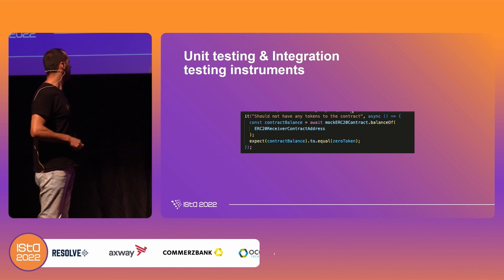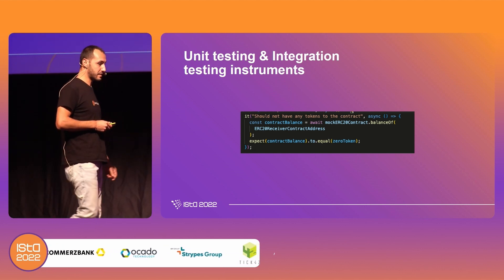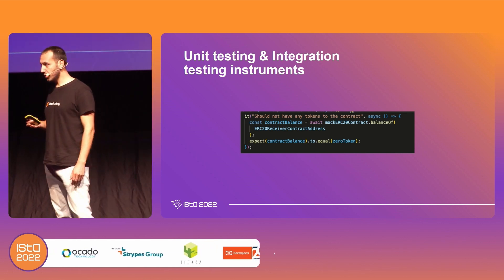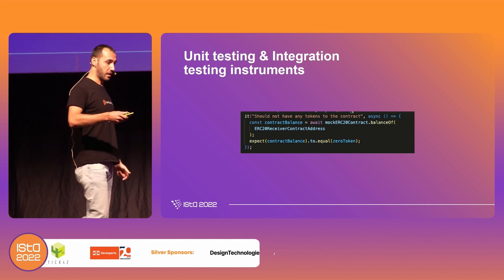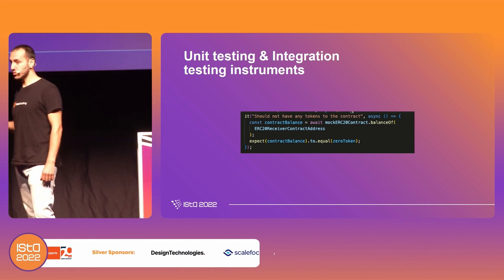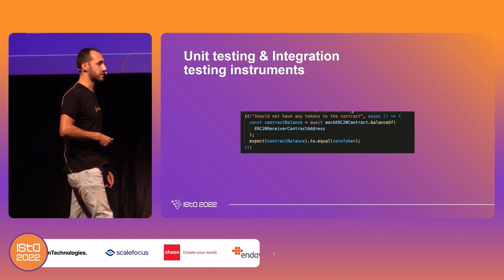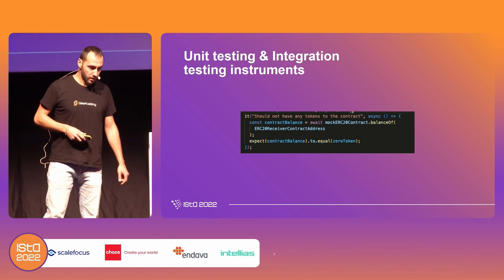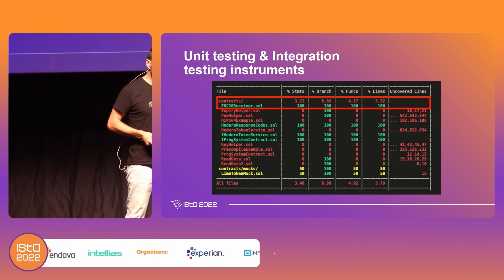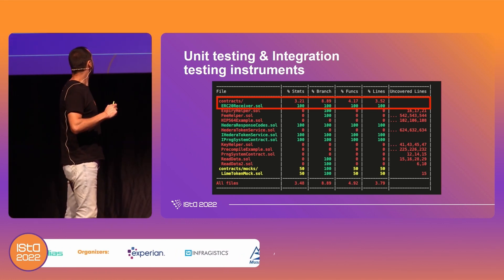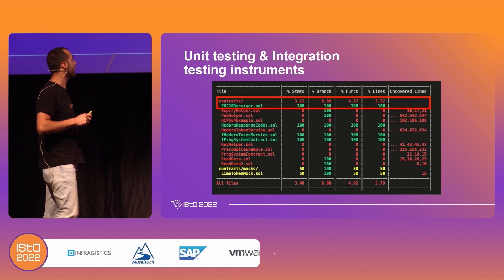Here you can see how unit tests may look — different assertions can be created, for example asserting that we should not have any tokens in the contract at a specific stage. Imagine two, three, even 500 of these tests that you can run with a simple command. Hardhat runs a local owned network that you can use immediately to run and test your smart contracts. You can also use Hardhat to check your code coverage — here you can see that one contract has 100% code coverage, but others still need unit tests because they have uncovered lines.